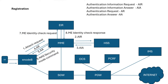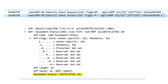Once NAS Security Mode Command is complete, MME sends the IMEI for an ME Identity Check Request toward EIR to verify whether the UE is whitelisted or blacklisted. EIR checks the status of the UE and responds with an ME Identity Check Answer. The protocol between MME and EIR is Diameter. The request is 3GPP ME Identity Check Request, and the answer shows equipment status as whitelisted.